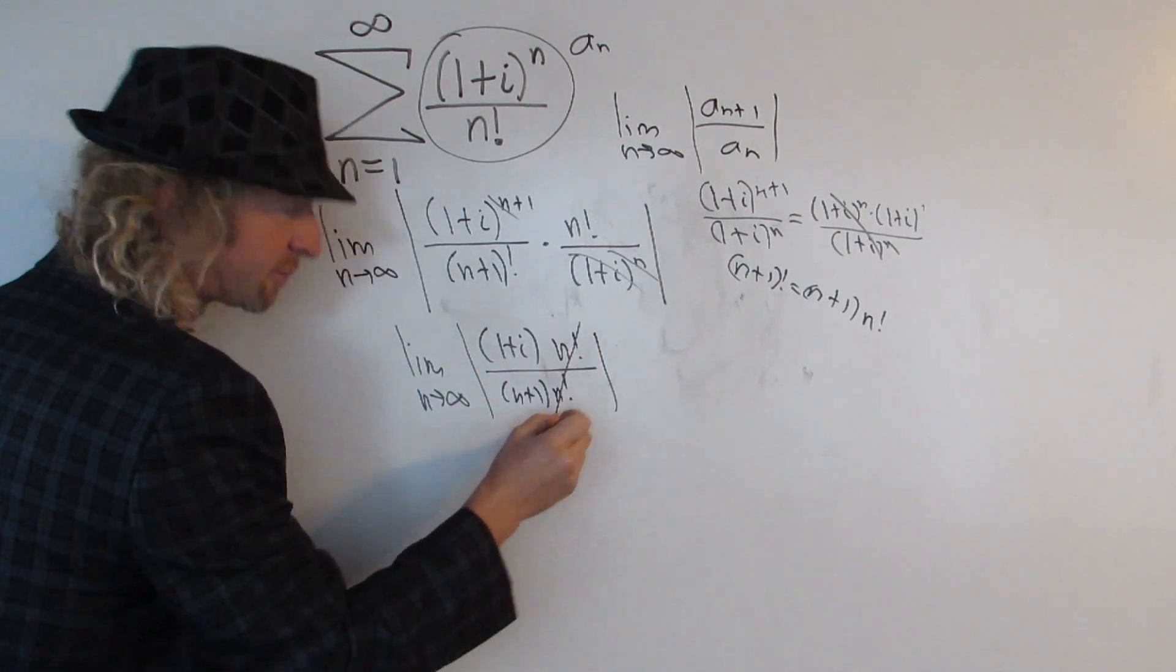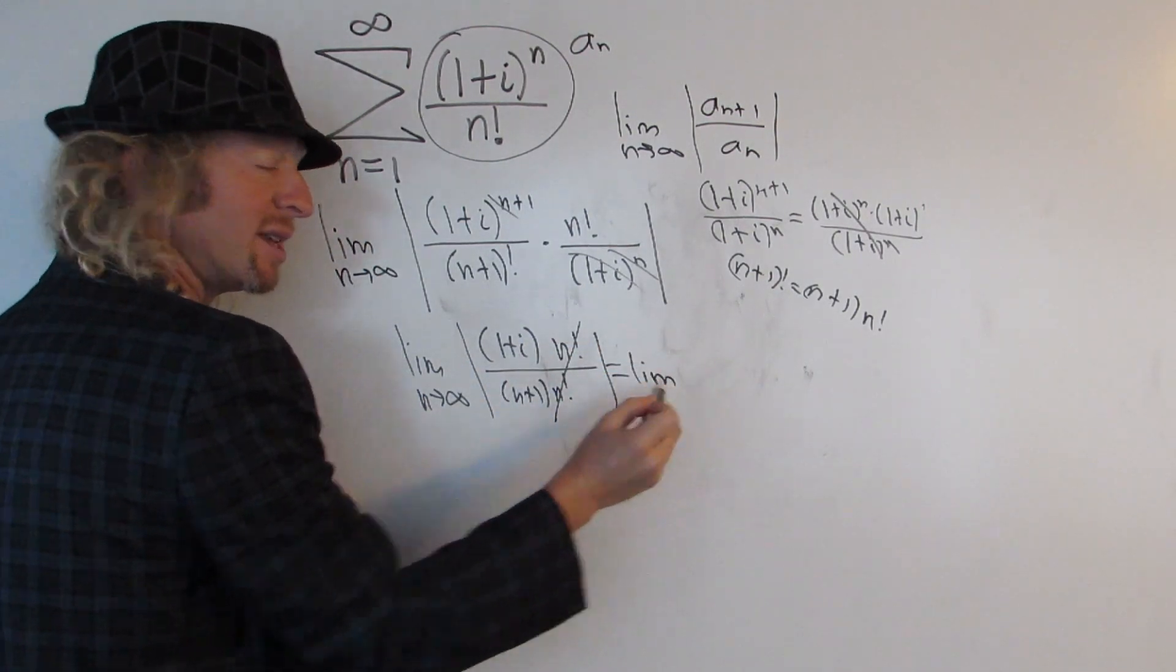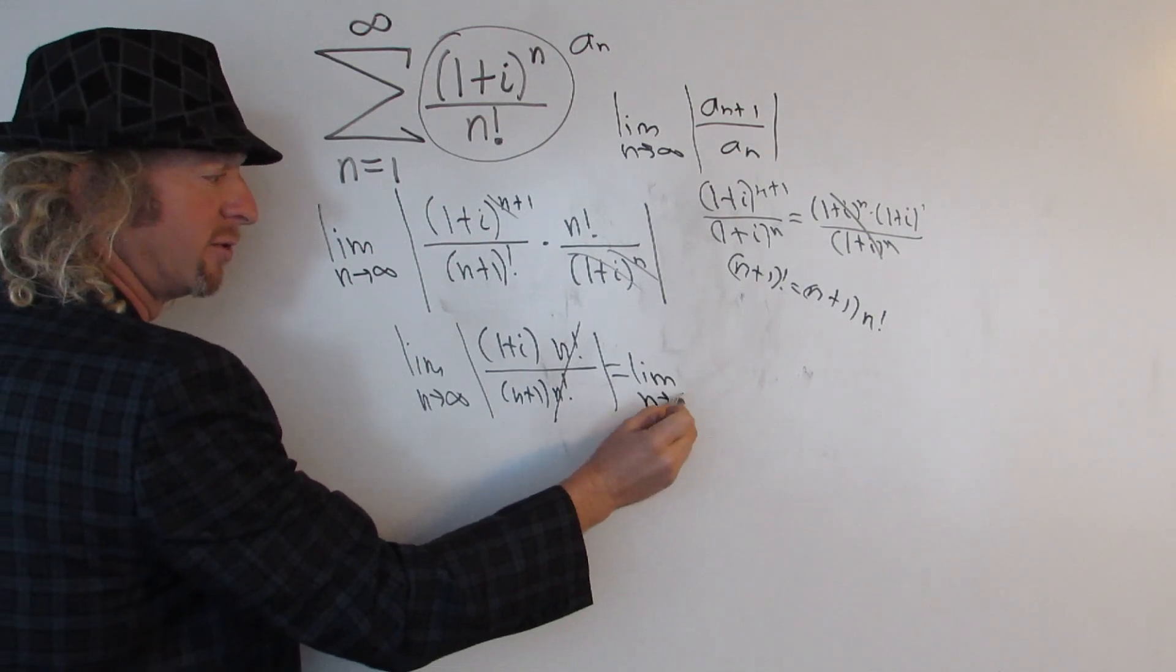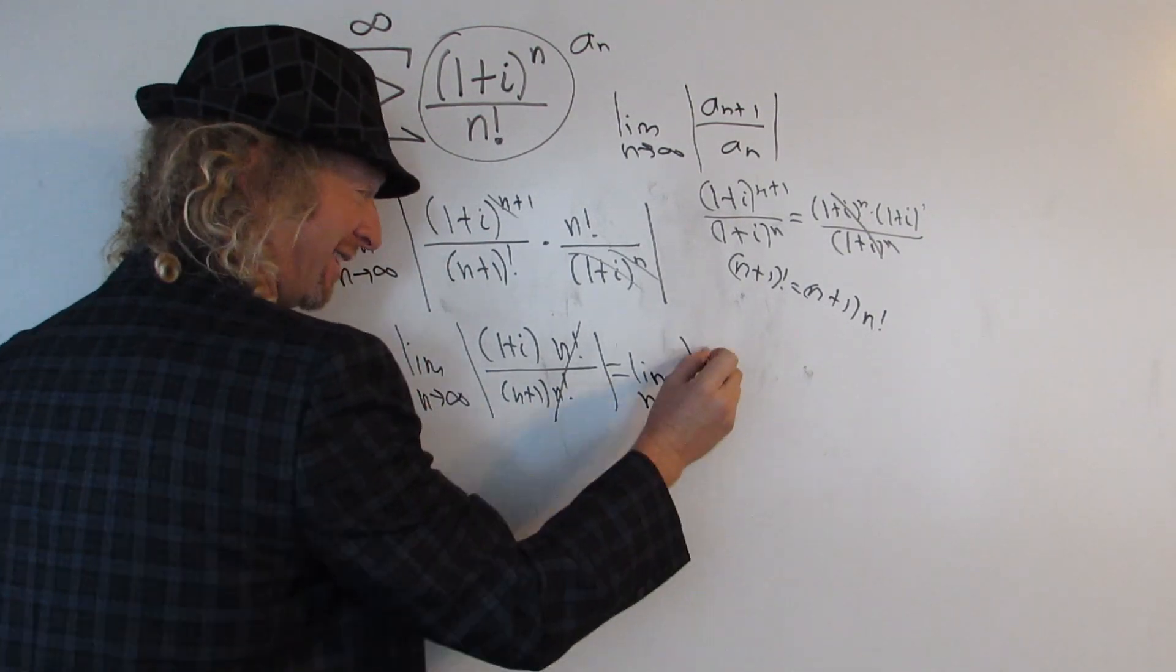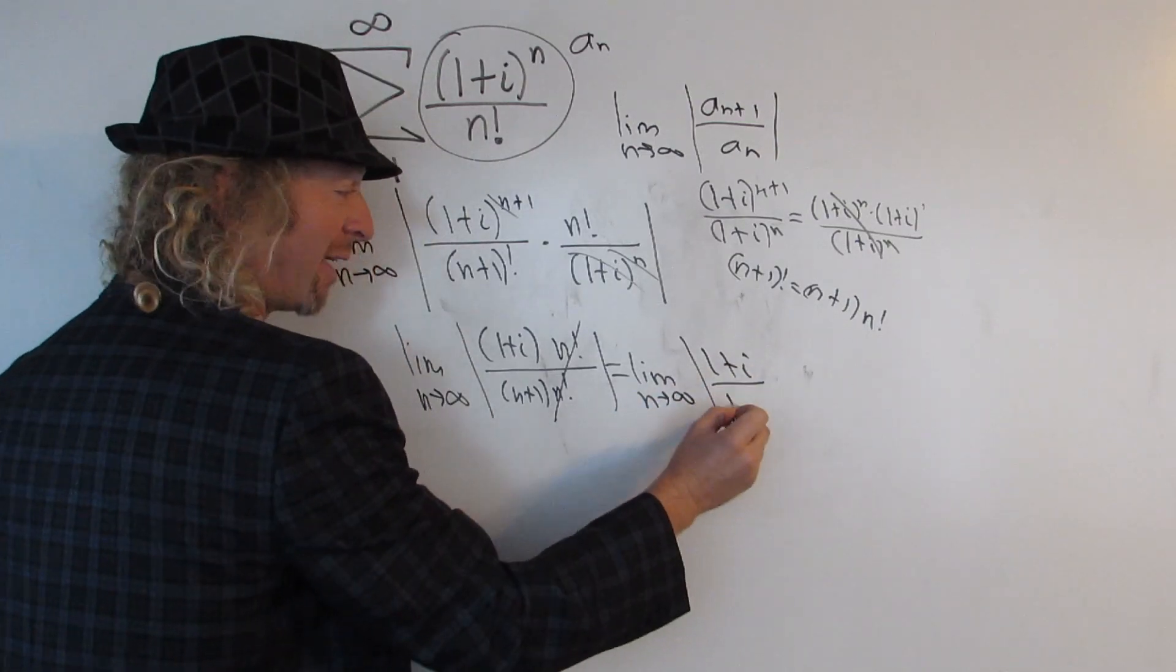So what's going to happen is we're going to have n factorial over (n plus 1), n factorial. These cancel, so we get the limit as n goes to infinity of the modulus (1 plus i) over (n plus 1).